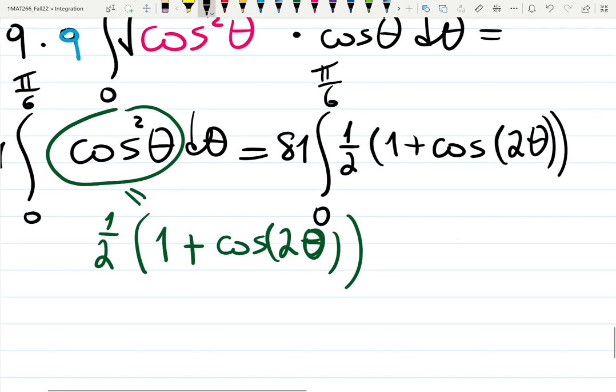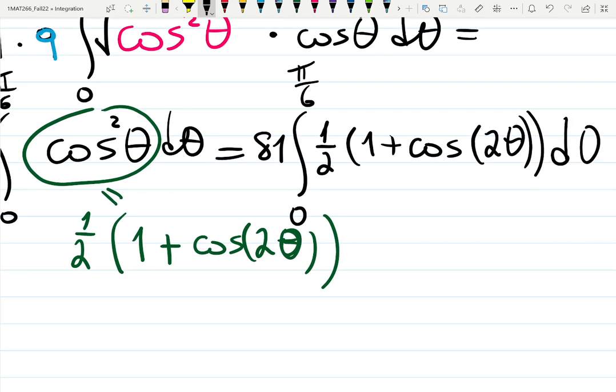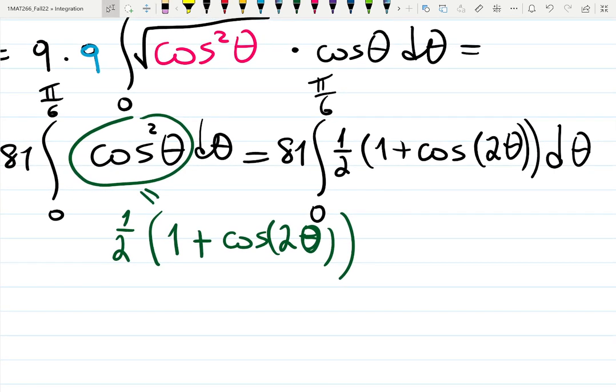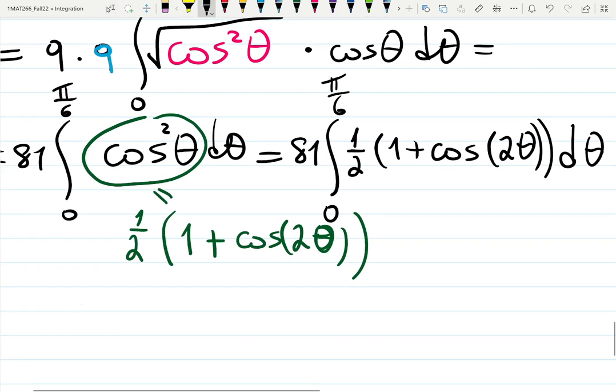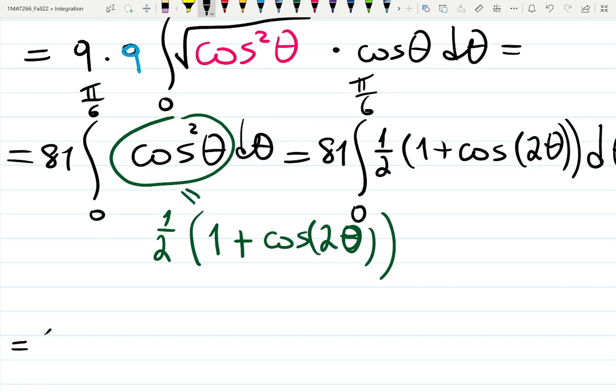So it will be 1/2(1 + cos 2θ) dθ. And now integrating it as two small integrals. It gives you 81/2, integral of 1 is theta.